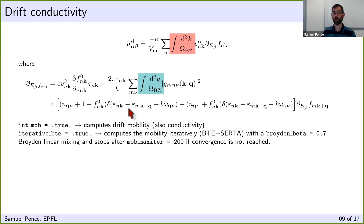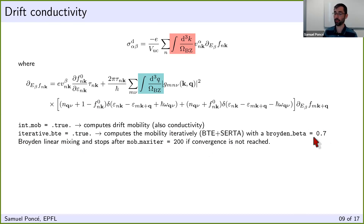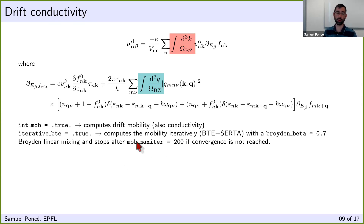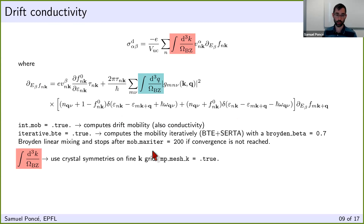The iterative solution uses Broyden linear mixing — setting it to 0.7 means 70% of the new solution and 30% from the previous one; setting it to 1 means no mixing. Iterations stop after mob_maxiter is reached — in this case 200. Typically convergence is faster, but if a calculation never converges this maximum prevents it from running indefinitely. The default value is 300 if not specified.